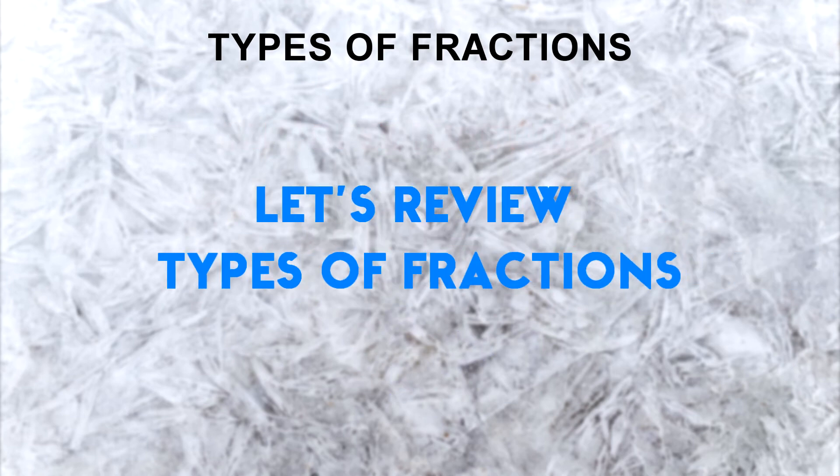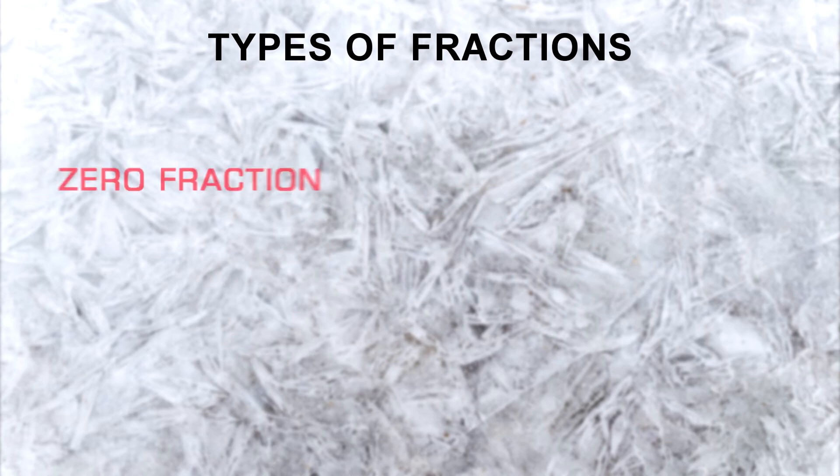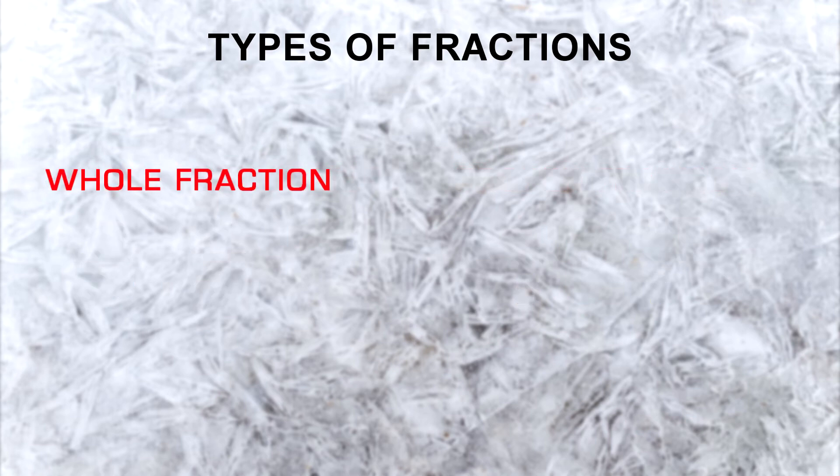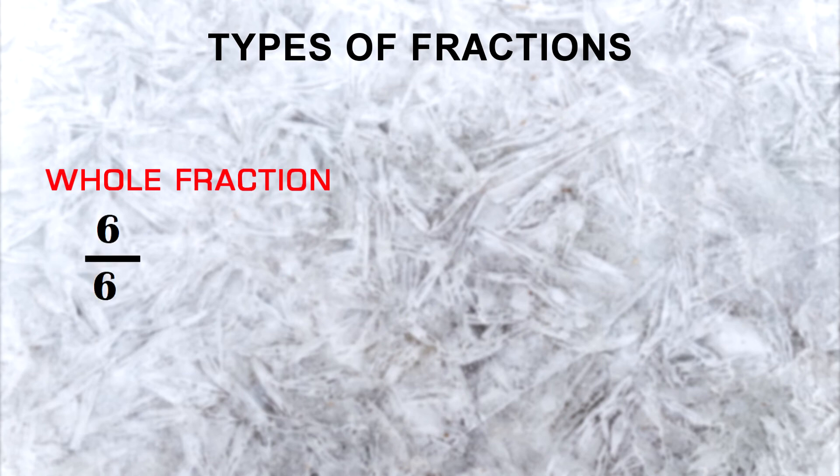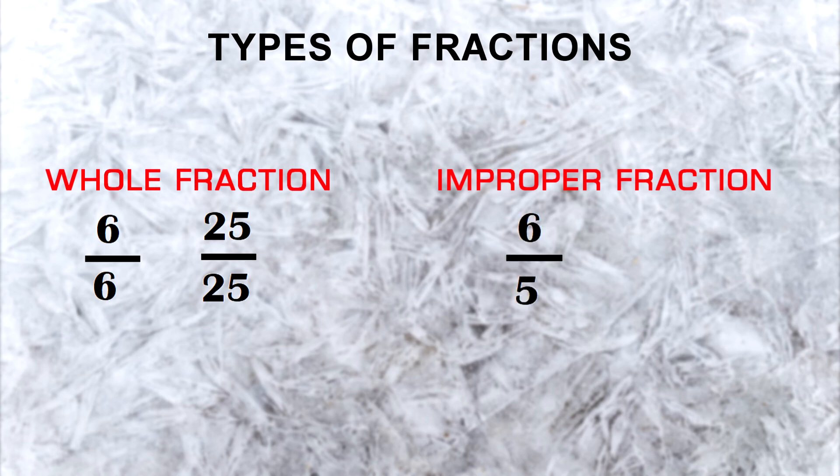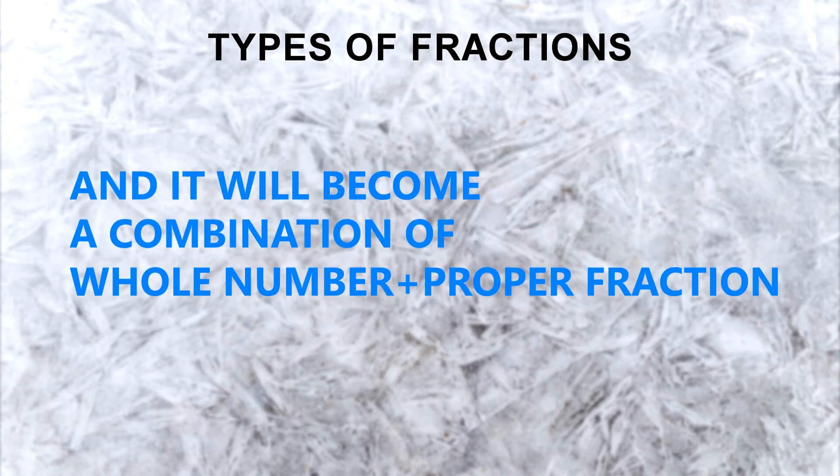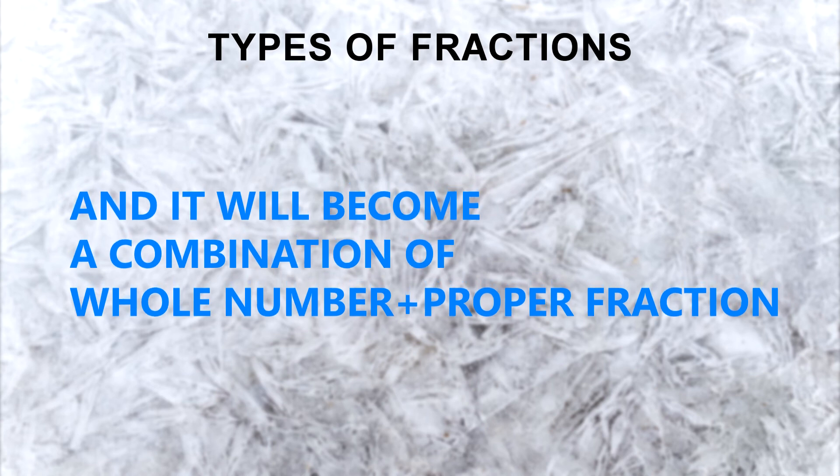Alright, let's review types of fractions. We have learned zero fractions, which is 0 over 20, 0 over 50. Proper fractions, so the numerator is smaller than the denominator, 1 over 5, 2 over 7, and so on. Whole fractions, 6 over 6, 25 over 25. Improper fractions, 6 over 5 or 19 over 2, and so on. And here I would like to say improper fractions can be converted into mixed fractions too, and it will become a combination of a whole number plus a proper fraction.